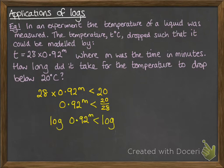If we go through solving this equation, we can get 0.92 to the M is less than 20 over 28, which simplifies to 5 sevenths. On the next line I've taken log of both sides so we can now use our log rules. M log 0.92 is less than log 5 sevenths.